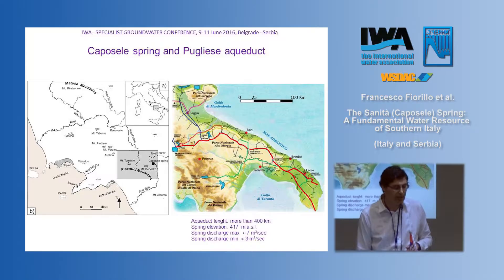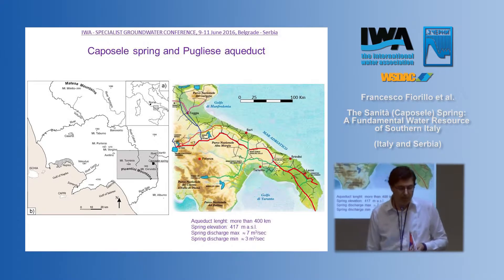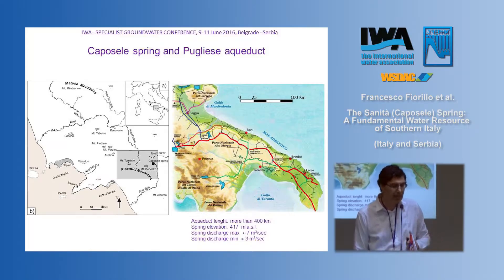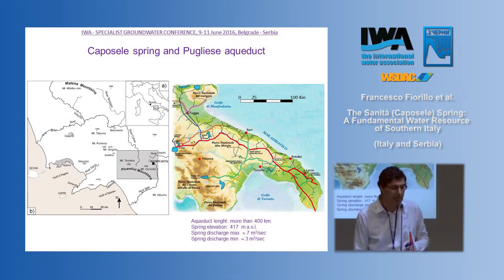In red are shown the main channels of the Pugliese Aqueduct, which is the main aqueduct of Italy. The Puglia region is very poor in water resources because it is a flat karst area, and all the underground water flows to the sea through brackish springs.